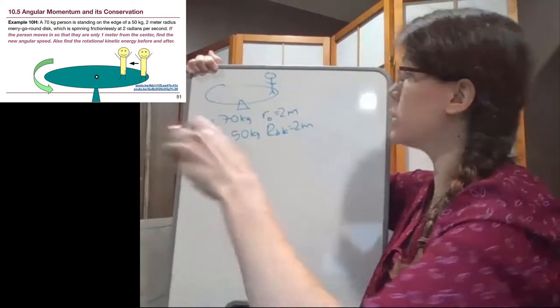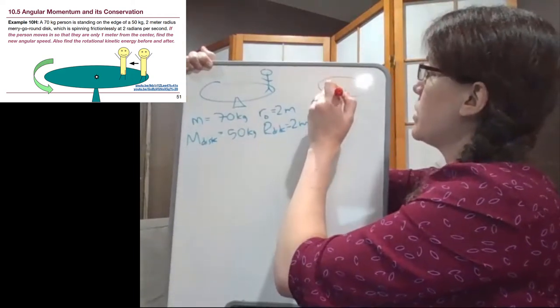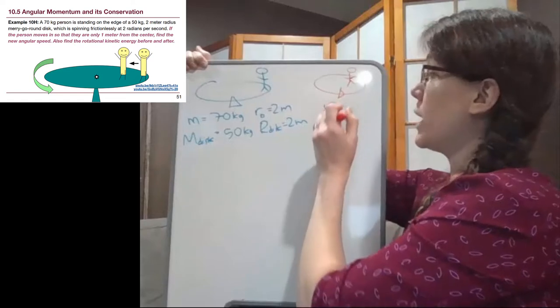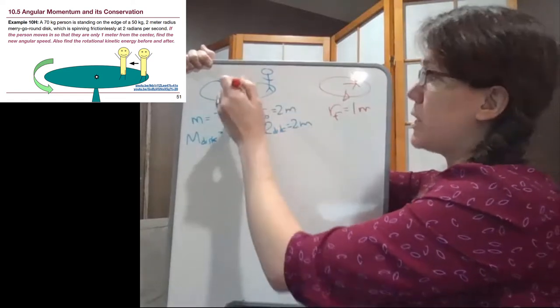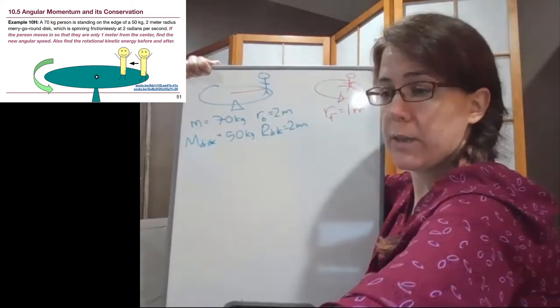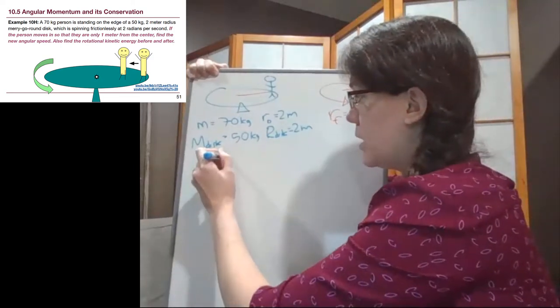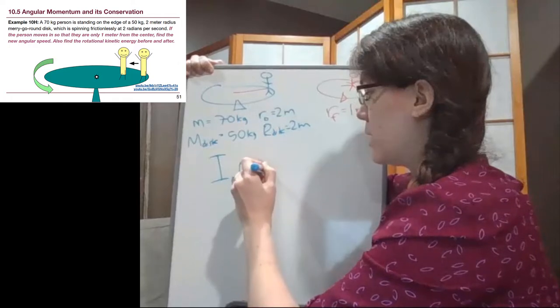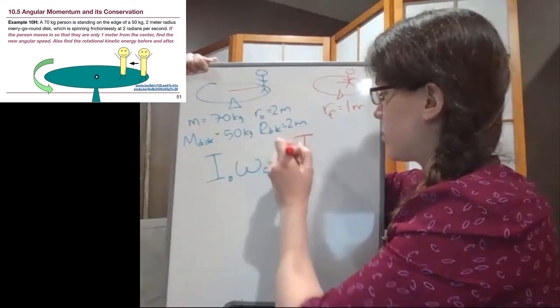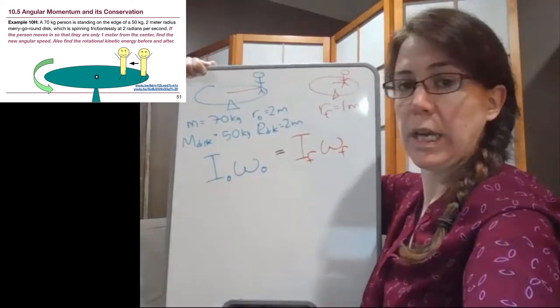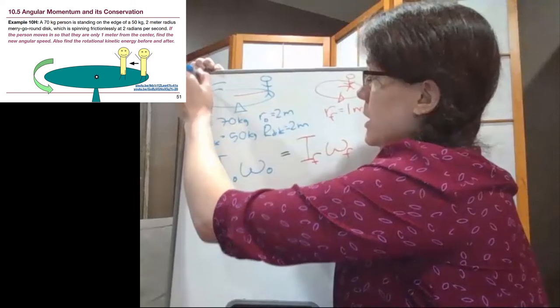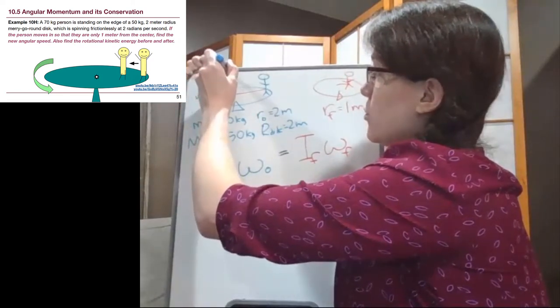What does change is that this person moves inwards. They move not to the edge anymore, but about halfway so that their final location is at a distance of one meter from the center instead of a distance of two meters from the center. So our big equation is that I initial times omega initial is equal to I final times omega final. Now in the problem, we are also told that the initial omega, the rotation here, the initial omega is two radians per second.